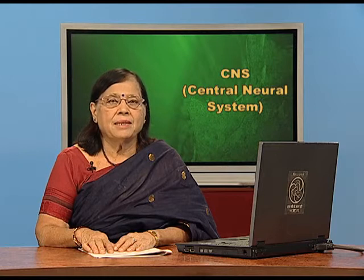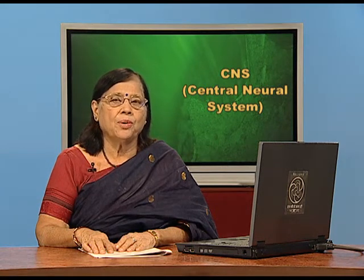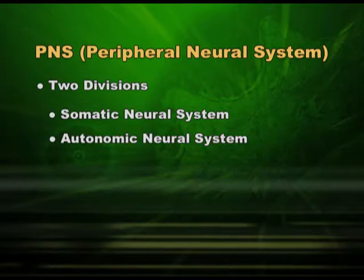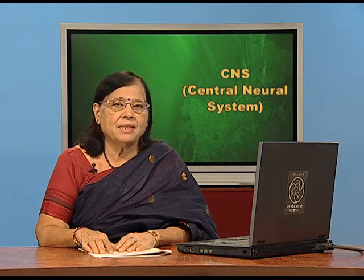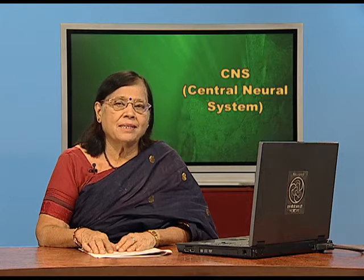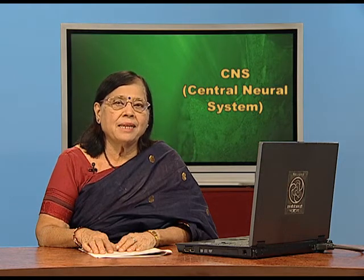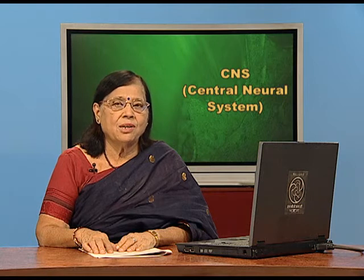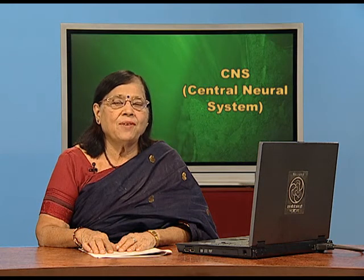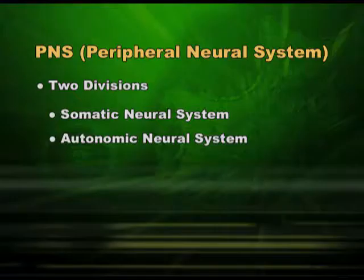The peripheral nervous system has two major divisions: the somatic neural system and the autonomic neural system. The somatic neural system, as the word indicates, deals with cells in the skin or distant cells that are connected to the main nervous system through the PNS, and hence it takes the route of the spinal cord. The other is the autonomic neural system.